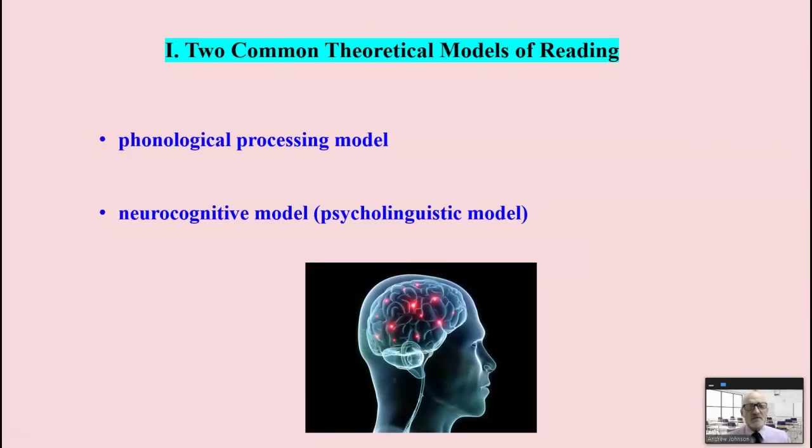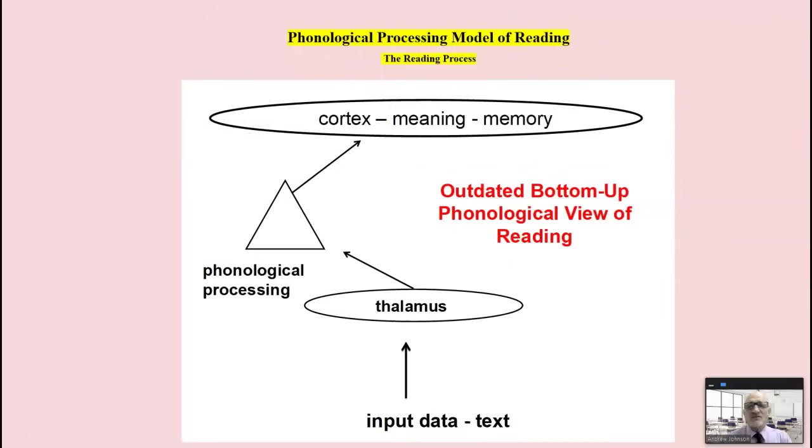We are going to start by looking at two common and not complementary models, theoretical models of reading. The phonological processing model and the neurocognitive model. These are two common ones and understanding them helps us understand how the brain creates reading with print. This is key to designing effective instruction and reading interventions.